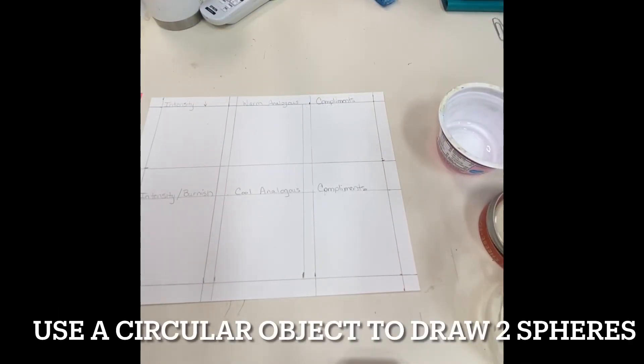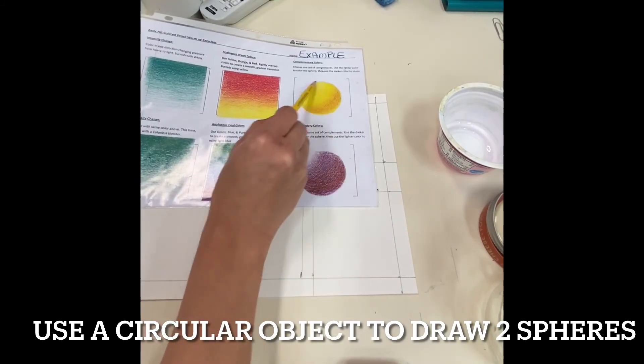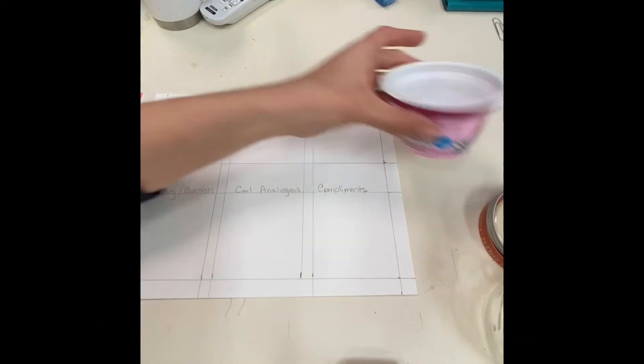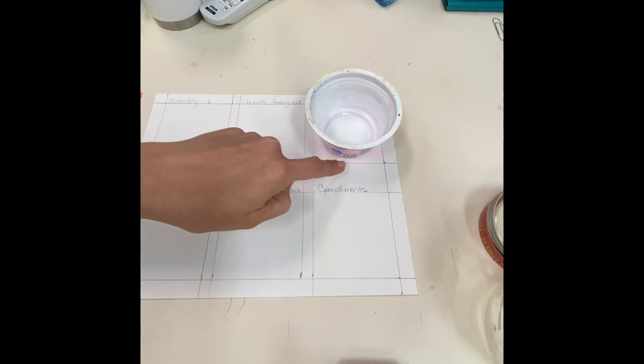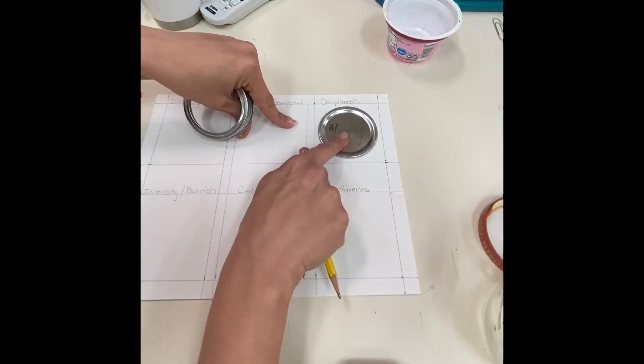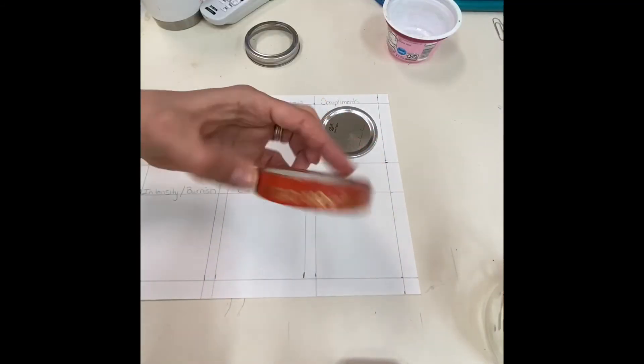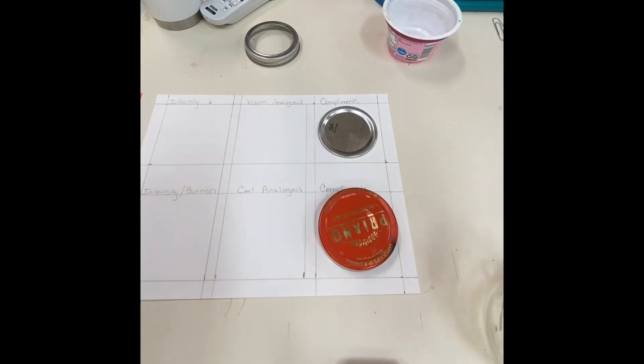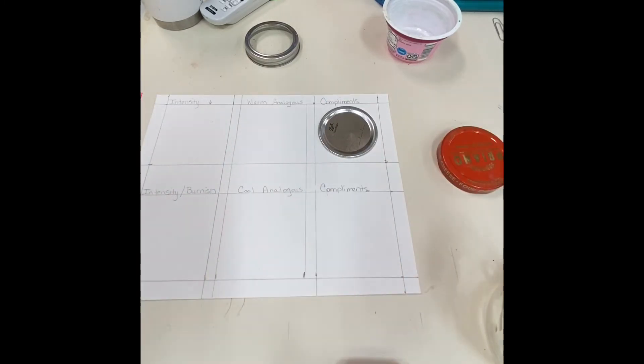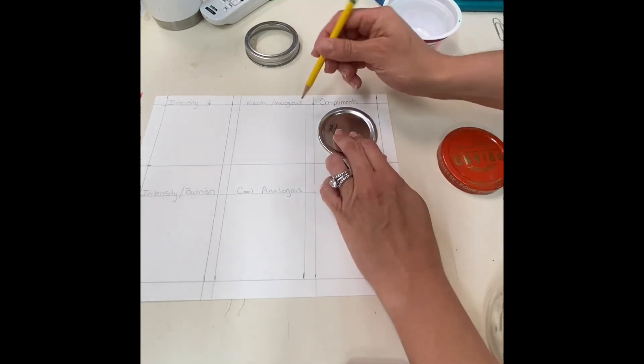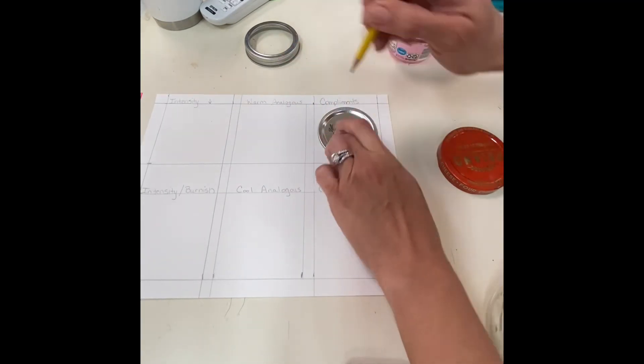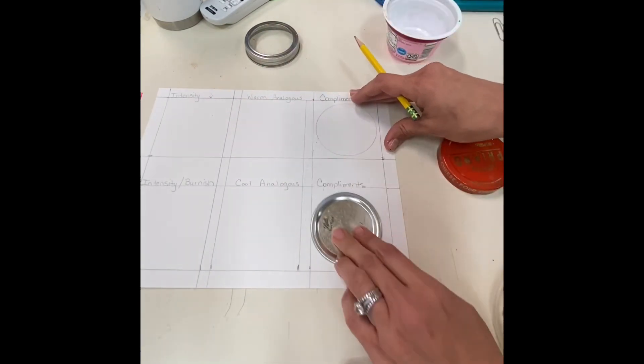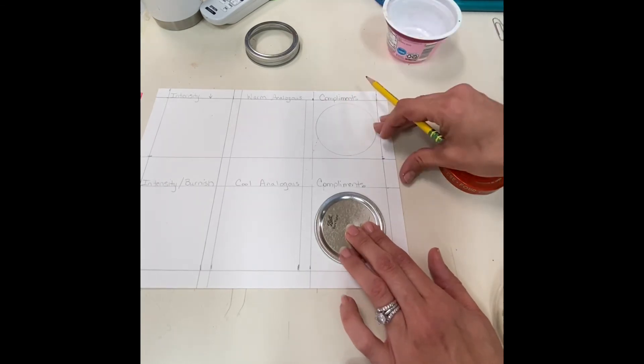If you look at an example of the finished worksheet, you're going to be drawing two spheres with complementary colors. You need to find some sort of circular object that fits within the box like a jar lid, try a yogurt cup, a water bottle. Just make sure that the circle fits within. Go ahead and trace one on the top and then another one on the bottom.